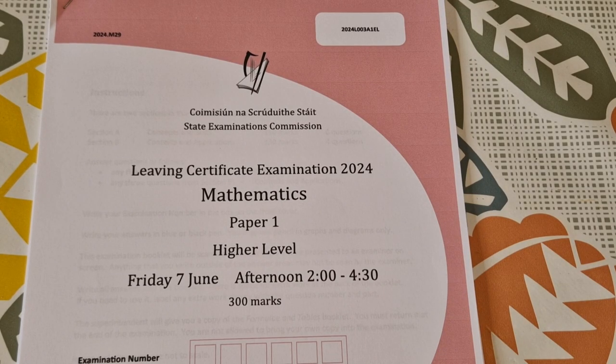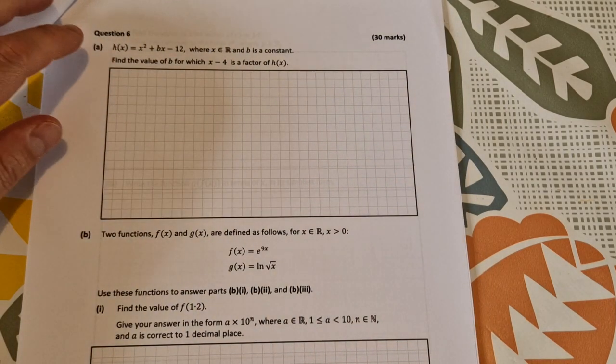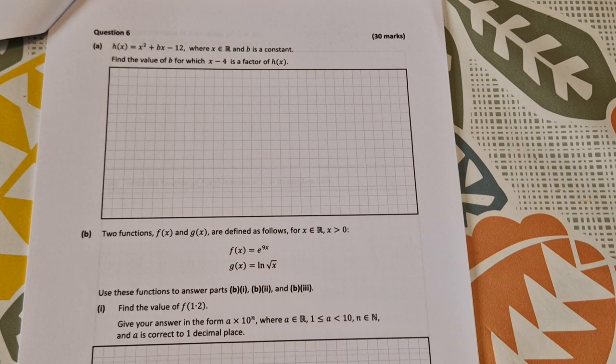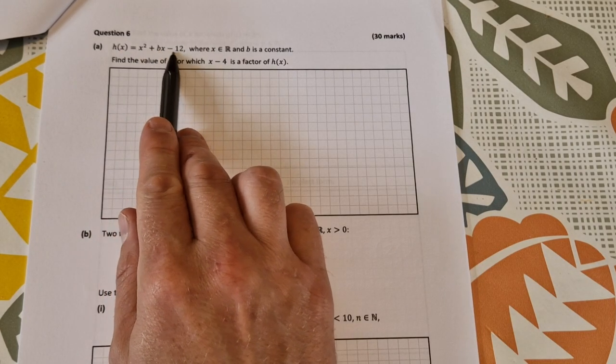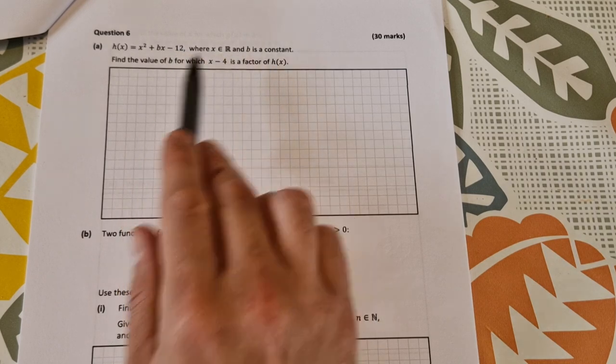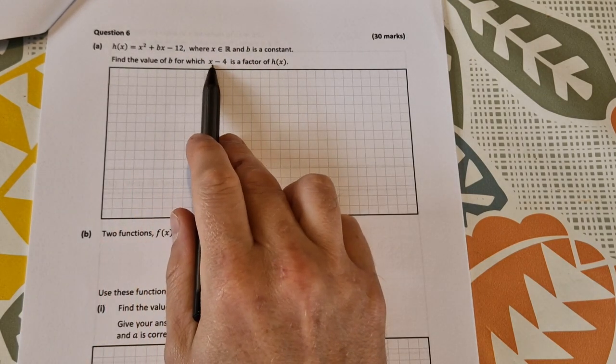Leaving Certificate Higher Level Maths 2024. This is the solution video for paper 1, question 6. Question 6 is a functions question. Part a: h(x) = x² + bx - 12, where x is an element of R and b is a constant. Find a value of b for which x - 4 is a factor of h(x).